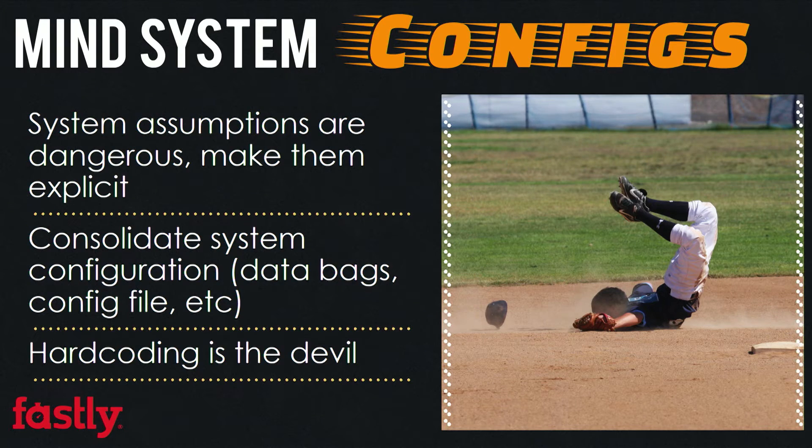Minding your system configuration is also valuable. System assumptions are dangerous — if you believe your system is always going to be next to another system, that's a bottleneck for re-architecting. Consolidating system configuration is interesting because some systems take input from a data bag, others from a config file, and the worst system you could deal with is when things are hard-coded. If you're addressing localhost anywhere, that's the absolute worst — it's a hard-coded assumption that will come back and bite you later, and it's very easy to miss when you're just trying to get something out the door.